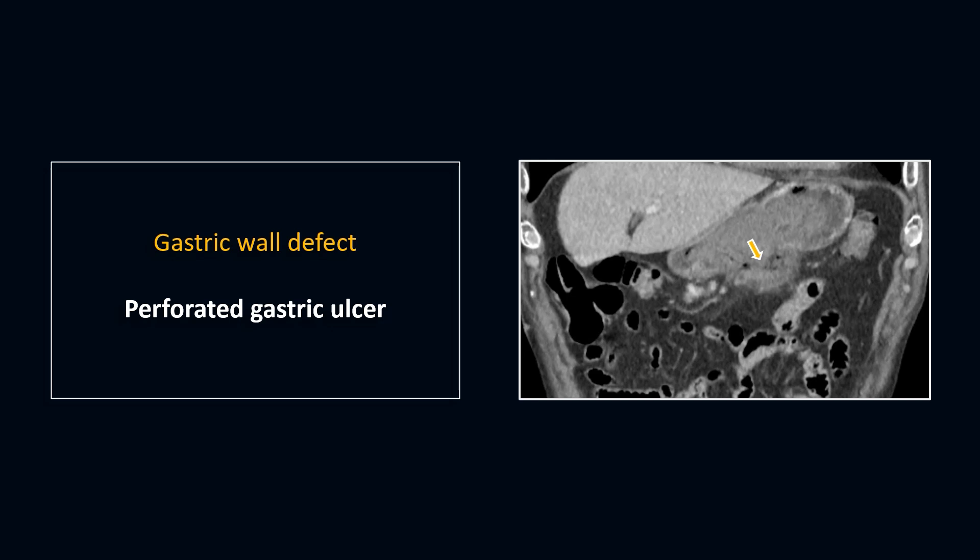The most common reason for gastric perforation is ulcer disease. Perforation of the stomach usually presents as subdiaphragmatic free air on the chest x-ray, peritoneal fluid, and gastric wall thickening. Sometimes there's discontinuity of the gastric wall. And surprisingly, extravasation of oral contrast is not a frequent finding.